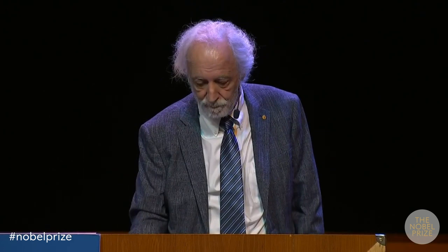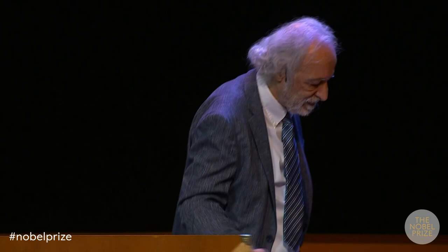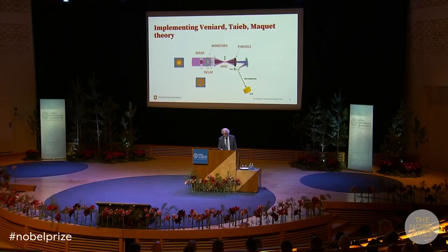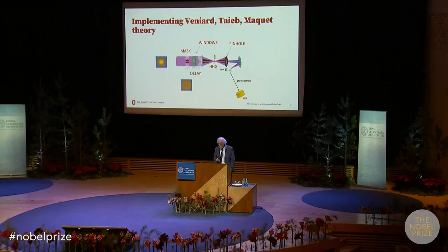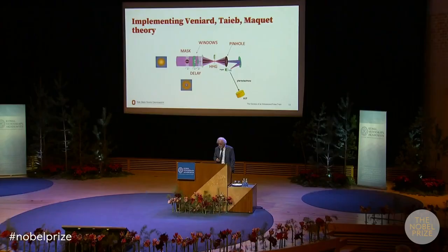How do we implement this theory in an experiment? The important element was a mask dividing the initial beam into two parts, plus a couple of glass windows that could be oriented to introduce an attosecond-precision delay between the two beams. Then there is the gas jet where the harmonics are created, and a pinhole — just a hole in a piece of metal — which plays a very important role, as we will see.